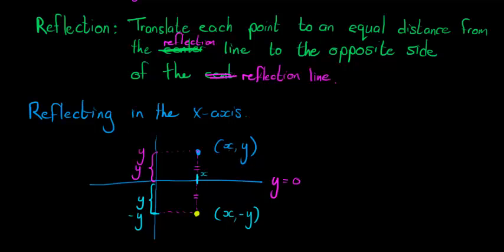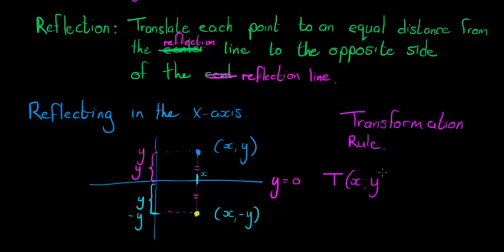This also gives us a way to find our transformation rule. What are we doing to every coordinate during a reflection in the x-axis? The transformation rule applied to coordinate (x, y) — labeled 'reflect in x-axis' — gives us: x does not change, so our x part of the coordinate stays exactly as it is, however the y part of the coordinate gets multiplied by negative one.